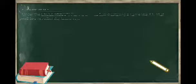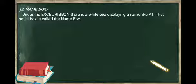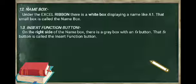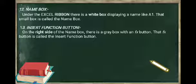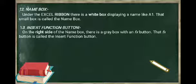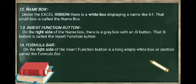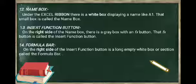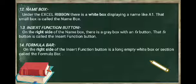Let us have a view on the components of the spreadsheet in MS Excel. Name box - under the Excel ribbon, there is a white box displaying a name like A1. That small box is called the name box. Insert function button - on the right side of the name box, there is a grey box with an FX button. That FX button is called the insert function button. Formula bar - on the right side of the insert function button is a long empty white box or section called the formula bar.